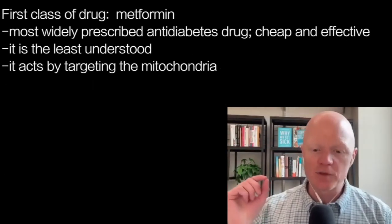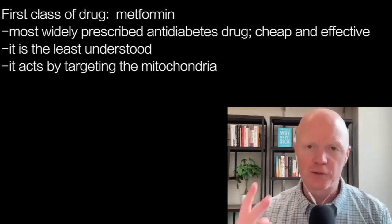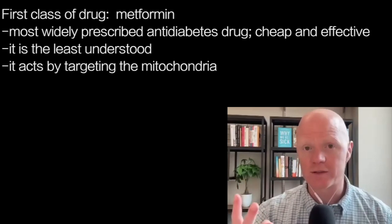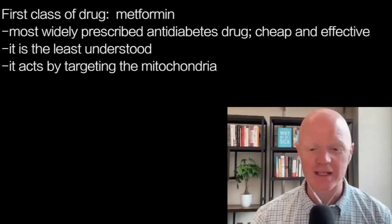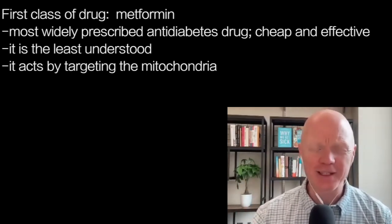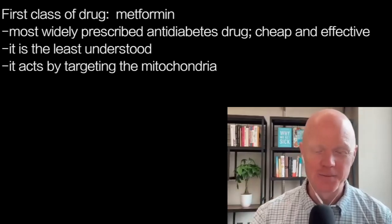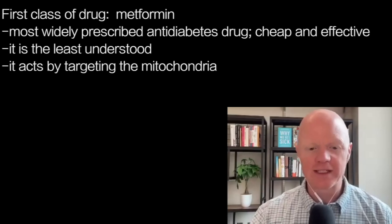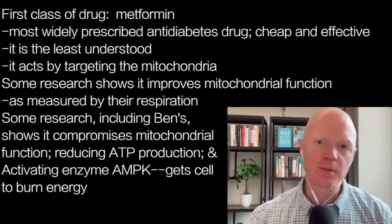Metformin is the most widely prescribed anti-diabetic drug on the planet for two reasons: one, it's cheap and off-patent; and two, it works. Despite being the most commonly used anti-diabetic drug, it is actually, of all the ones we're going to go through today, the least understood. The main theme of metformin is that it acts by targeting the mitochondria — that's the main mechanism of action.